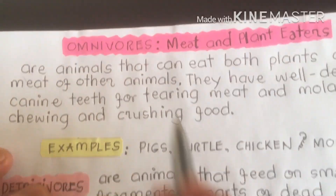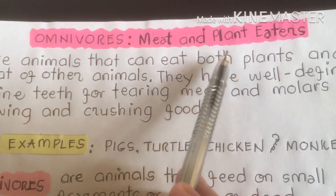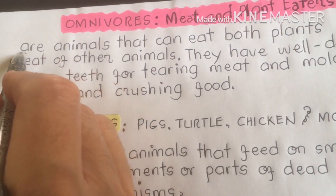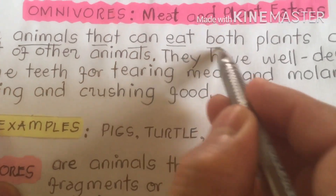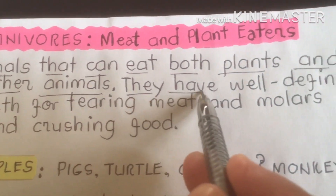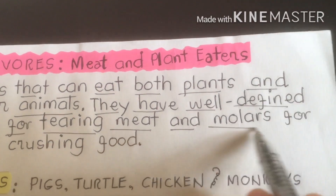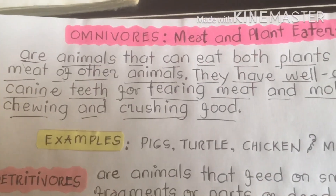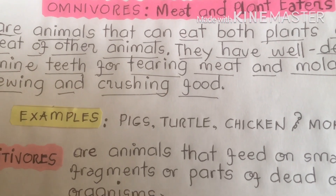The next classification of animals according to the food they eat is omnivores. Omnivores are meat and plant eaters. We as human beings belong here — we are omnivores. Omnivores are animals that can eat both plants and meat of other animals. They have well-defined canine teeth for tearing meat and molars for chewing and crushing food. As human beings, we can both crush and tear food into smaller pieces.